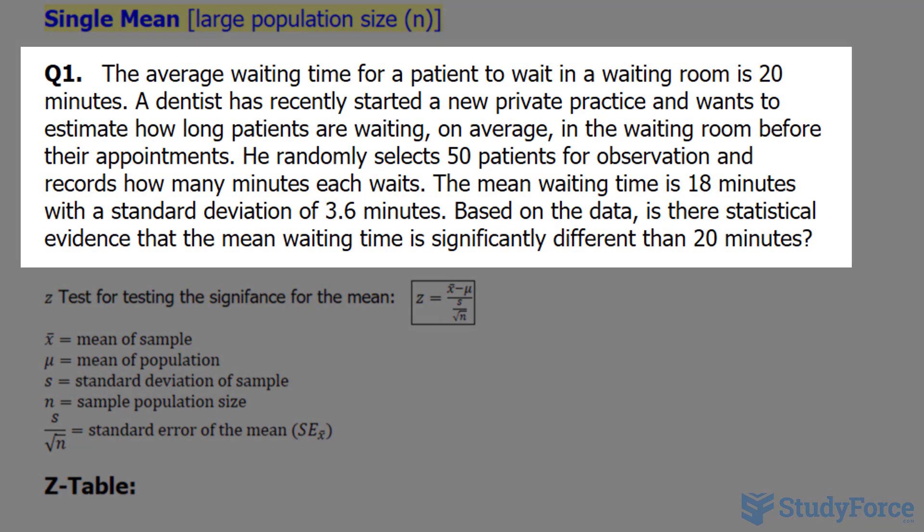The average waiting time for a patient to wait in a waiting room is 20 minutes. A dentist has recently started a new private practice and wants to estimate how long patients are waiting on average in the waiting room before their appointments. He randomly selects 50 patients for observation and records how many minutes each waits. The mean waiting time is 18 minutes with a standard deviation of 3.6 minutes. Based on the data, is there statistical evidence that the mean waiting time is significantly different than 20 minutes?